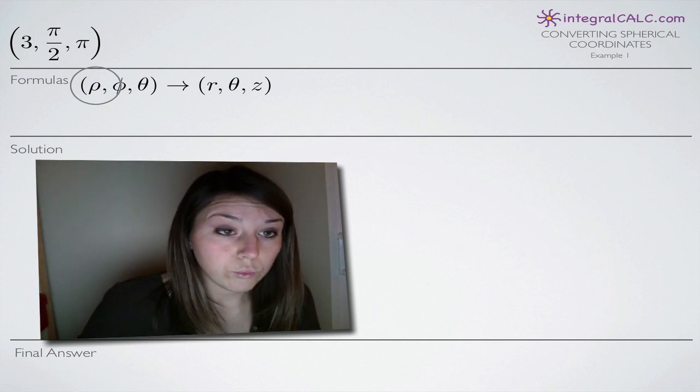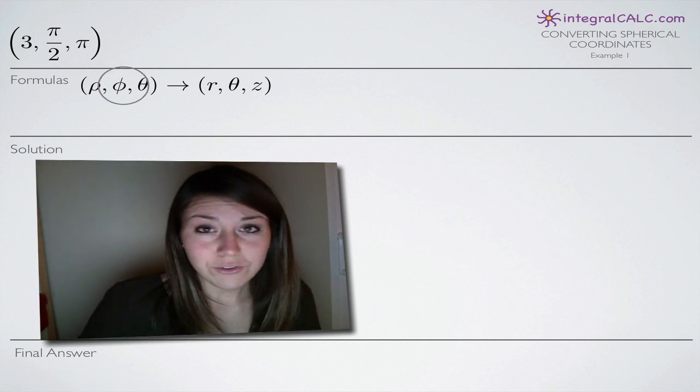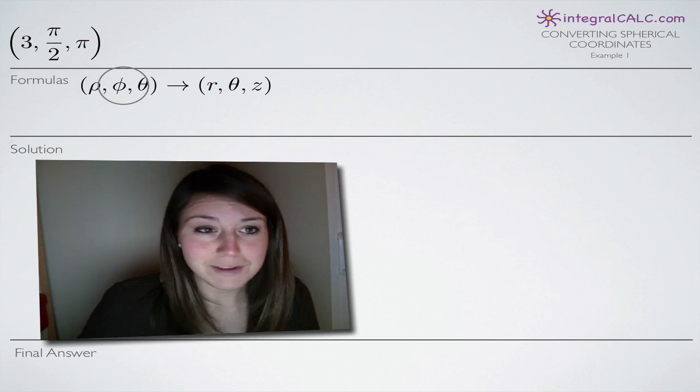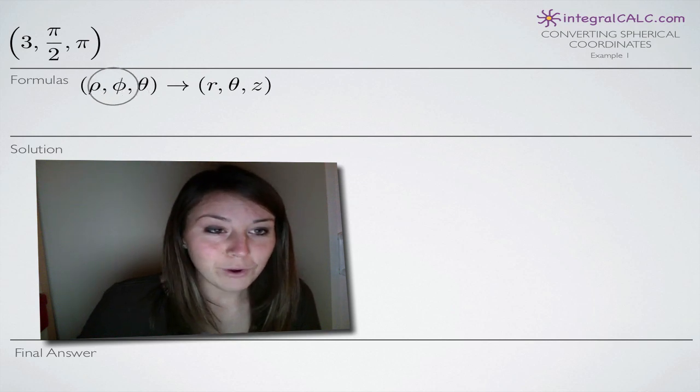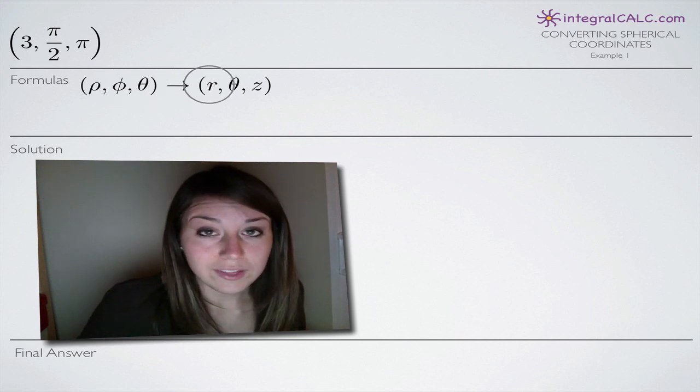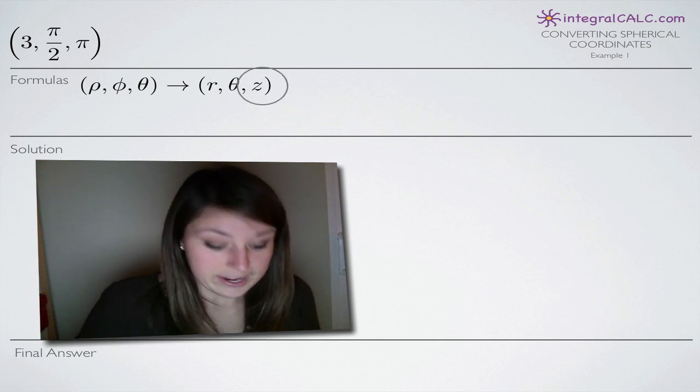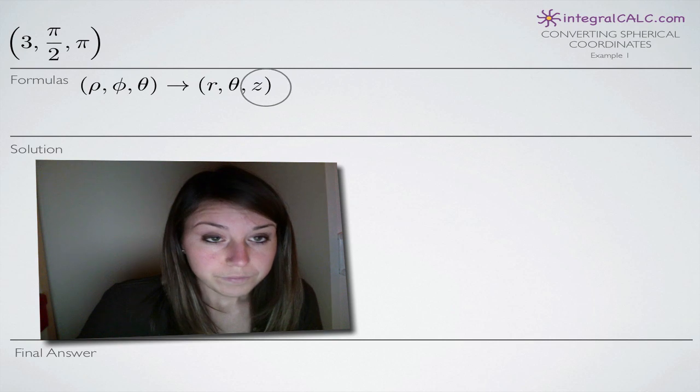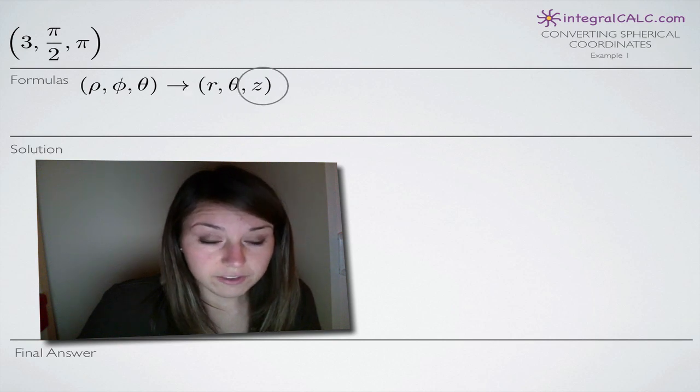Spherical coordinates are ρ, φ, or phi—I still don't know how to say that. If you know, please send me an email. But ρ, we'll go with phi and θ. And then we're going to convert that to cylindrical coordinates which are in the form r, θ, and z. So this is the conversion we're going to be using.